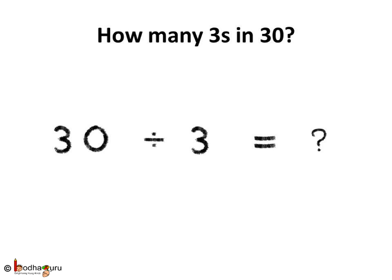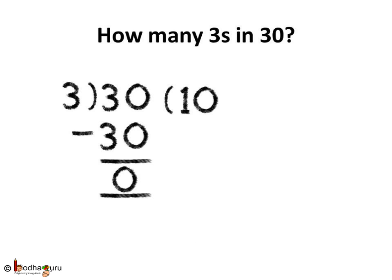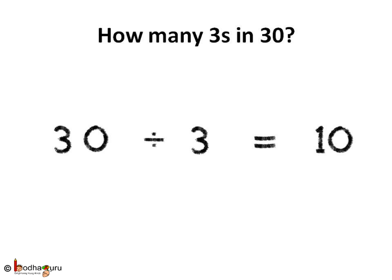So, let us divide 30 by 3. How many times 3 is equal to 30? If you know the table of 3, 10 times 3 is 30. So, 30 divided by 3 is 10. When 30 is divided by 3, we get 10.